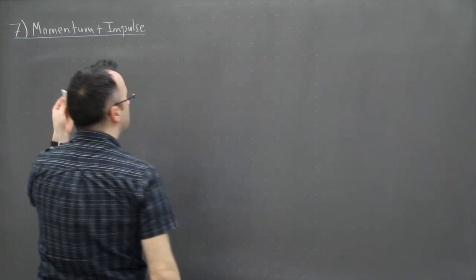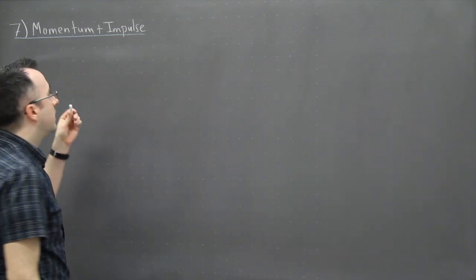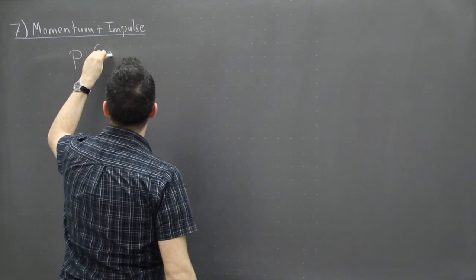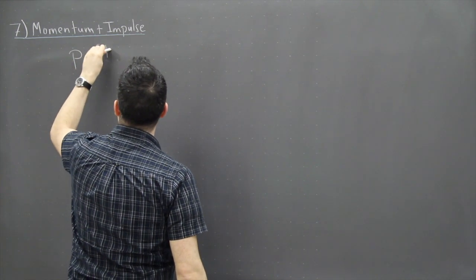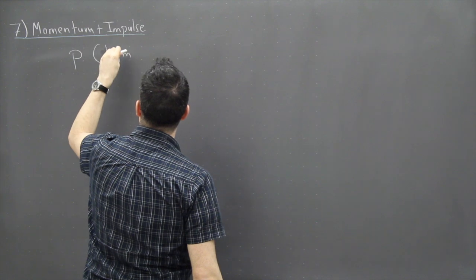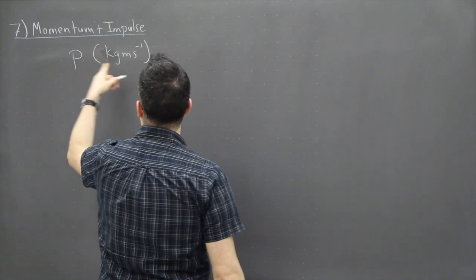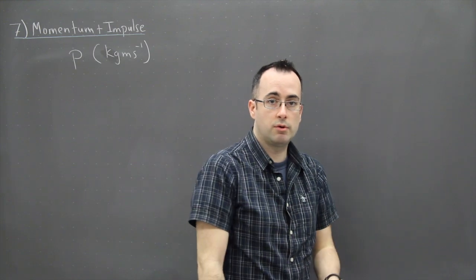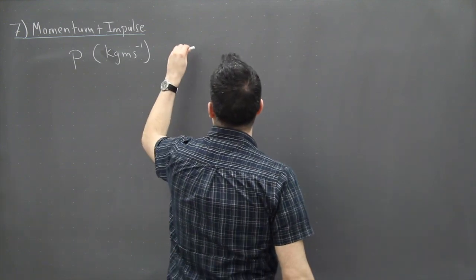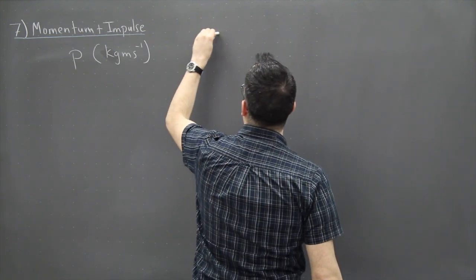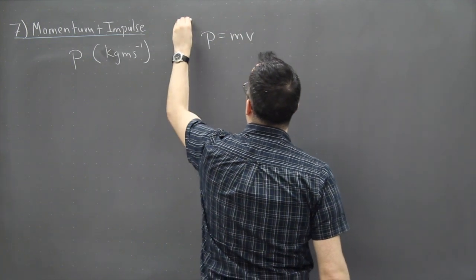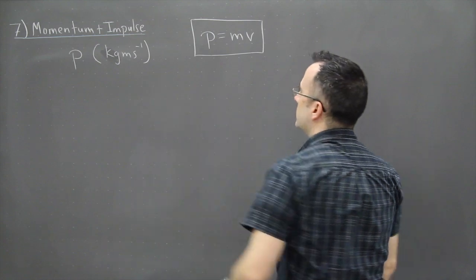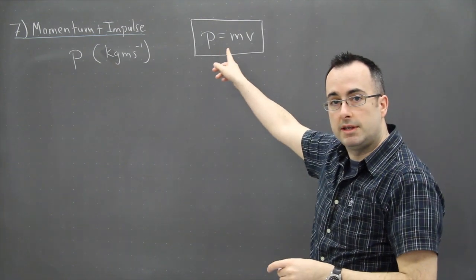First of all, momentum is actually given by this letter P, and we write it in the units of kilogram meters per second. Now the actual equation for it, that's actually very important as well. This is in your data booklet and this goes P equals MV. That's how I knew the units for it. So I didn't memorize the units, I just know the equation P equals MV.